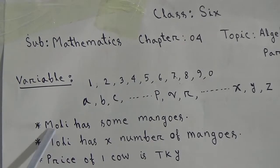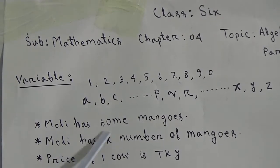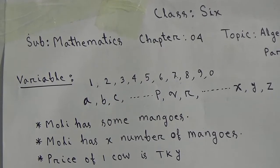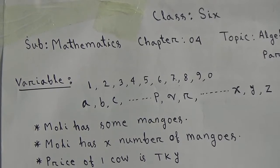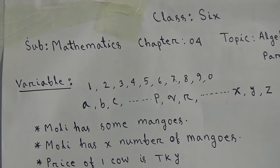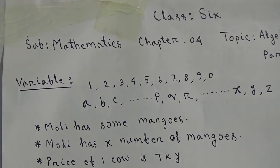Here you are watching a sentence: Molly has some mangoes. Here it is not mentioned that exactly how many mangoes Molly has. It may be 10 mangoes, may be 20 mangoes, may be any other number of mangoes. In algebra we can write this sentence like this: Molly has x number of mangoes. Here the value of x is unknown. The value of x may be 15 mangoes, may be 20 mangoes, may be any other number of mangoes.